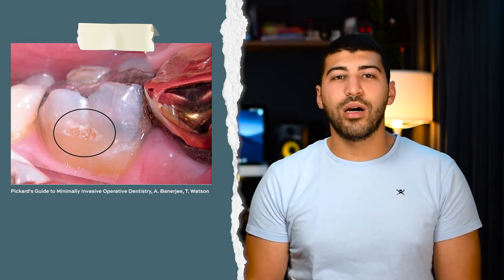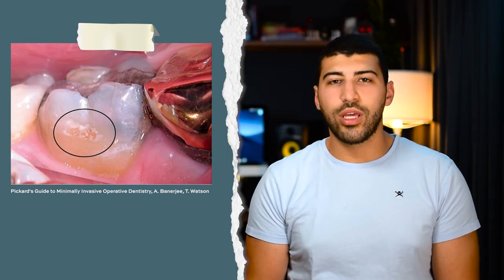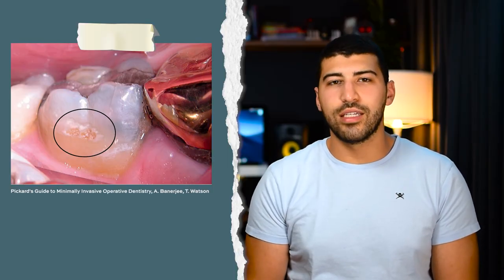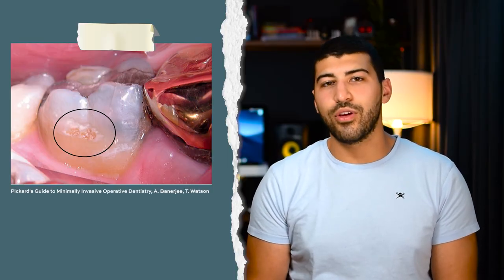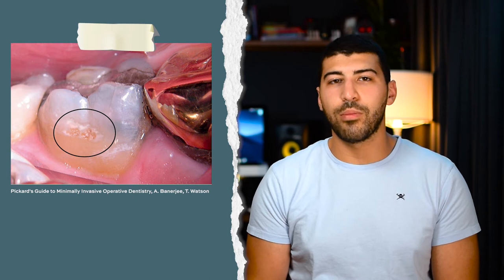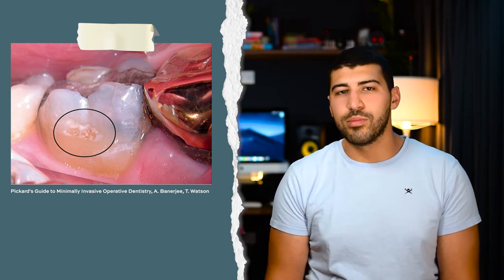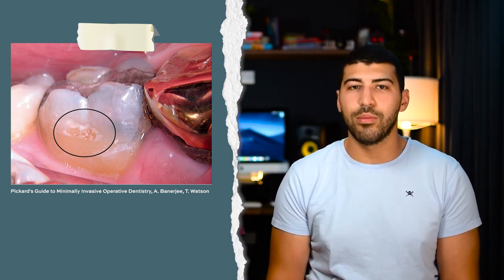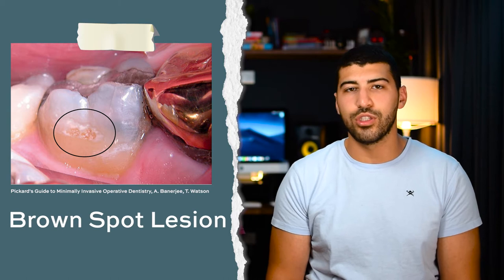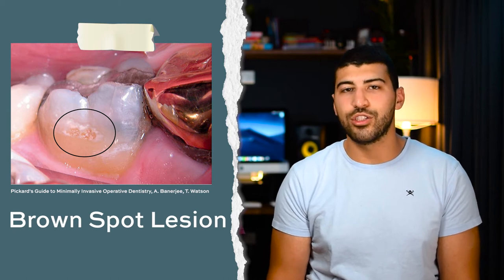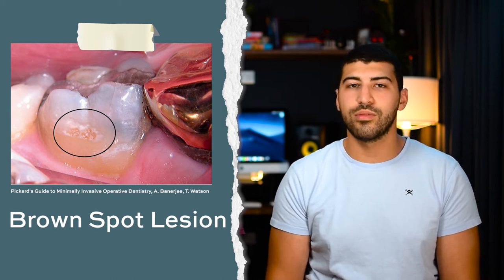As the caries progresses they become roughened, chalky and micro-cavitated, and now you can detect them by running a probe along the surface. There are no symptoms at this stage, and if the plaque is removed, the lesion can arrest and become a brown spot lesion with a hard shiny surface.